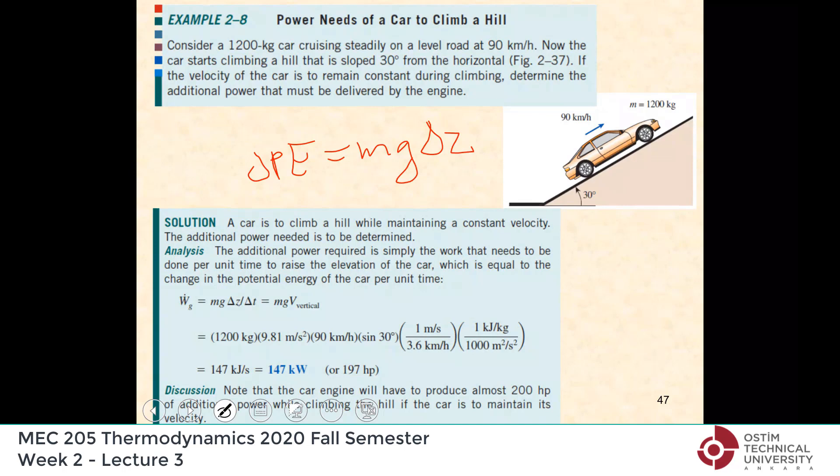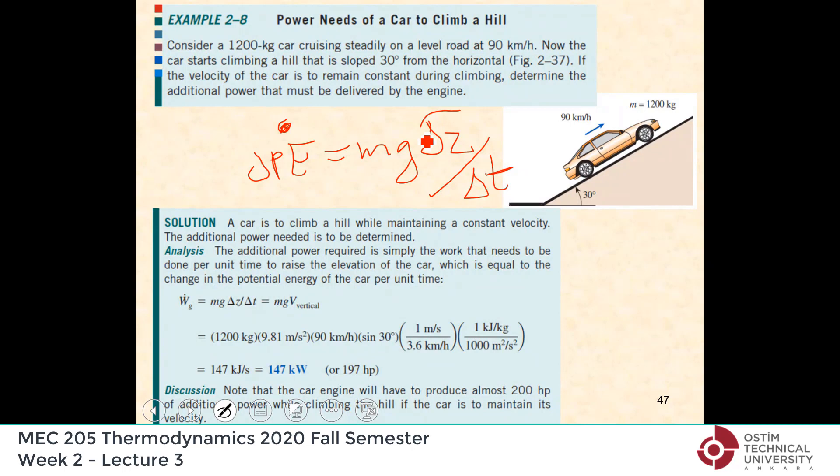What is the power needed? It is the potential energy change per unit time. So divide both sides by time — this becomes the time rate. And what is Δz over Δt? This is the vertical velocity, that is, how much the car is climbing per unit time — the vertical component of the velocity.